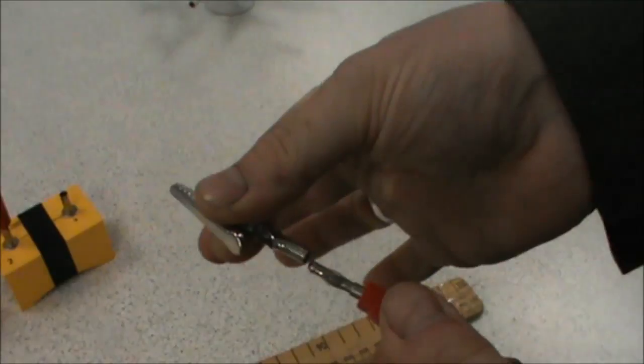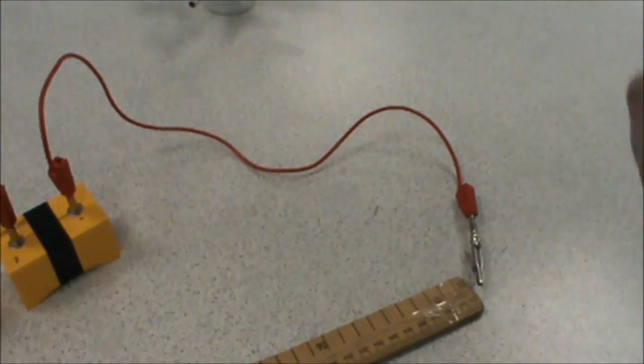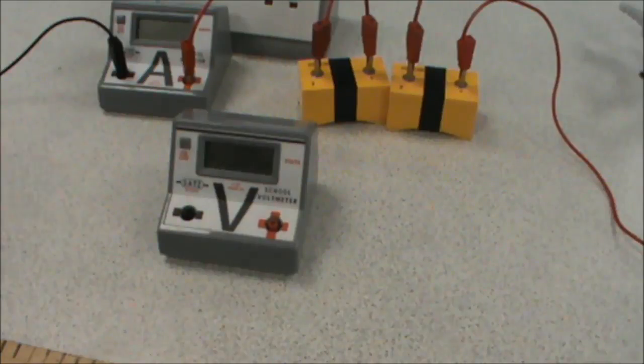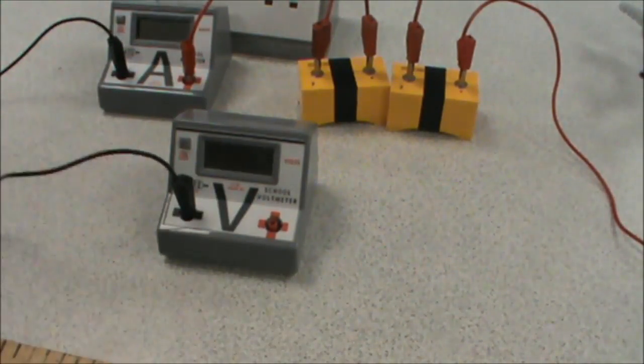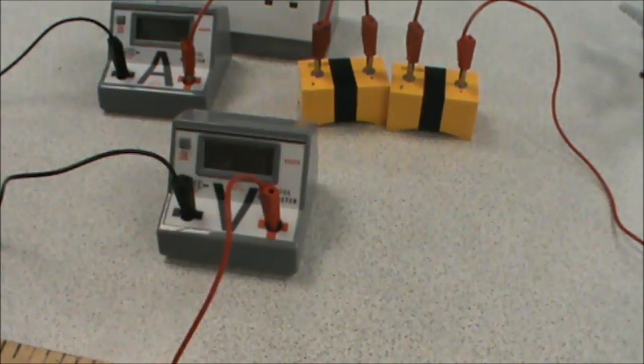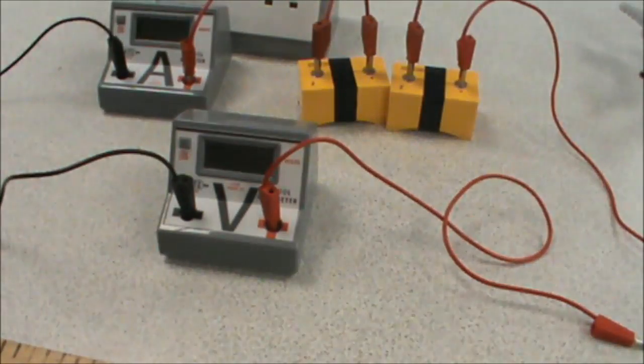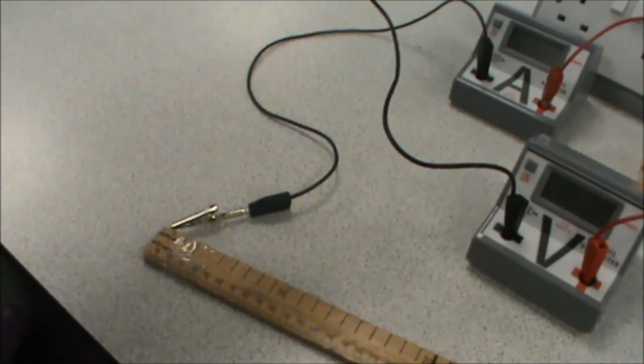The other end of our meter rule is connected using a crocodile clip on our lead, and then connected back to the power supply. Our voltmeter is connected in parallel to the two crocodile clips by plugging into the back of the sockets on the crocodile clips, like so.